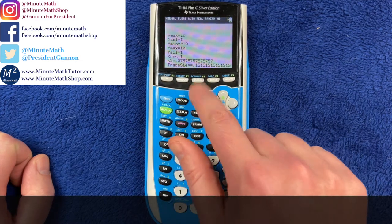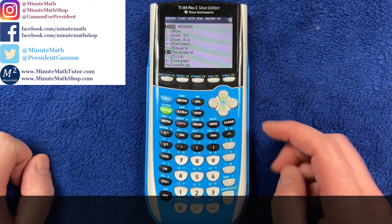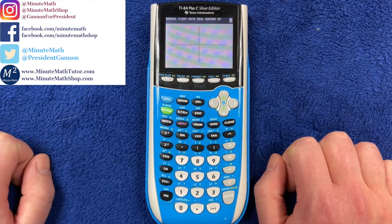If we press the zoom button up here and go down to standard, that would set that window as such, but we have nothing to graph.